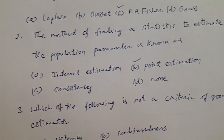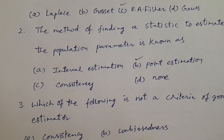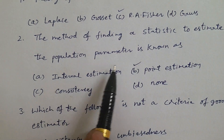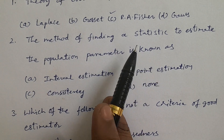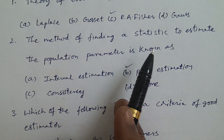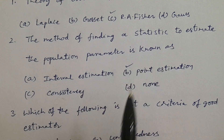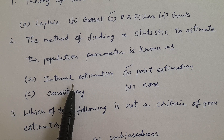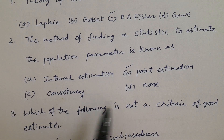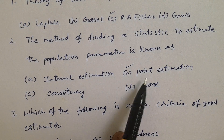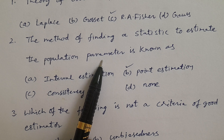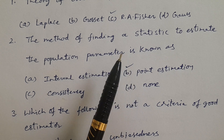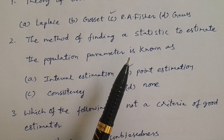Question number two: The method of finding a statistic — meaning a single statistic — to estimate the population parameter is known as: A. Interval estimation, B. Point estimation, C. Consistency, D. None. The answer is point estimation. Finding an interval is known as interval estimation.